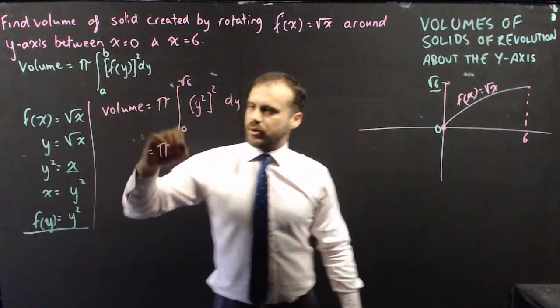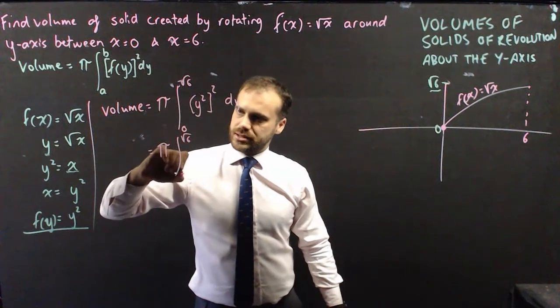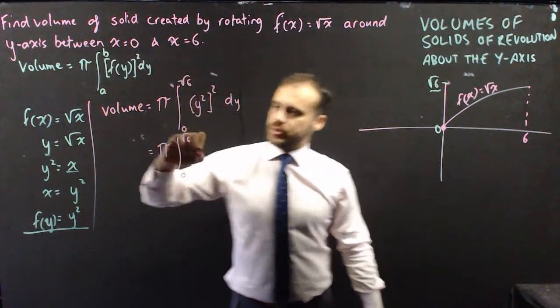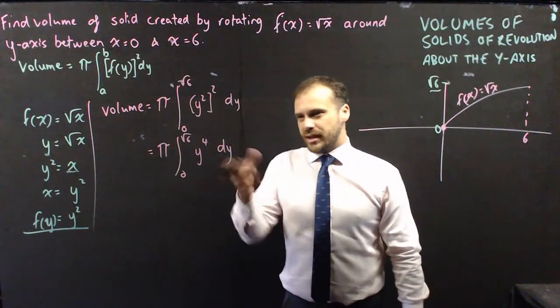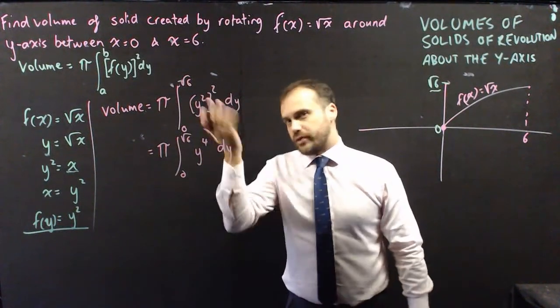That's going to be pi times the integral from 0 to root 6 of y squared squared, which is y to the 4, with respect to y. And now I can integrate that, which will be y to the 5 over 5.